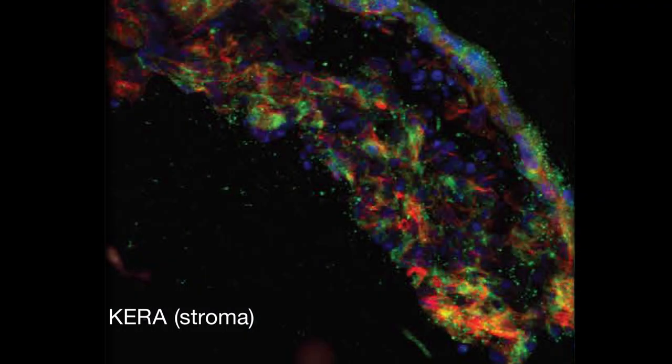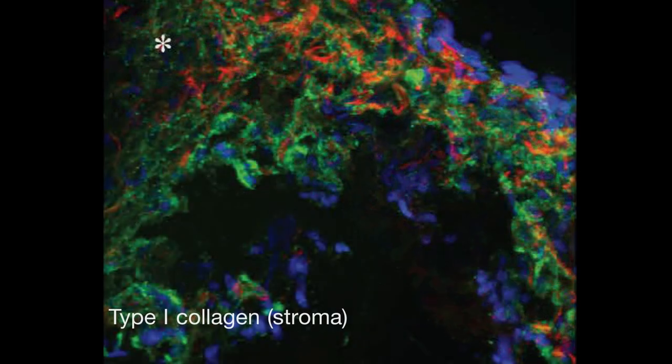And the stem cells didn't just adopt a new identity. They self-assembled into tiny, cornea-like structures.